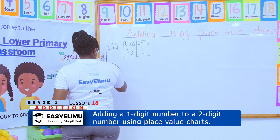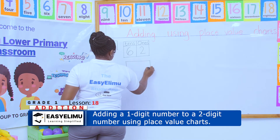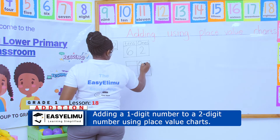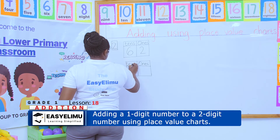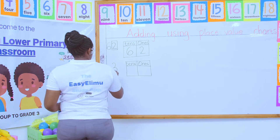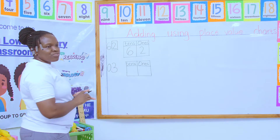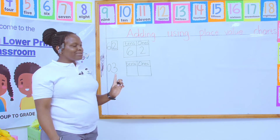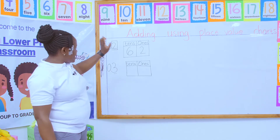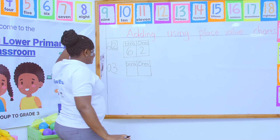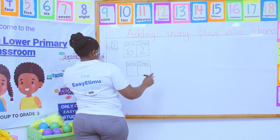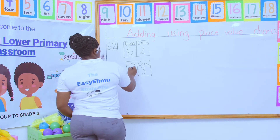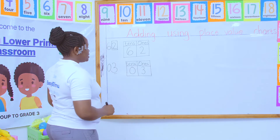What if the teacher has given you just one number — for example, three — and says represent this number in the place value chart? We said where there is no number, we put a zero so that it does not confuse us. So three appears in the ones place value and zero appears in the tens place value.